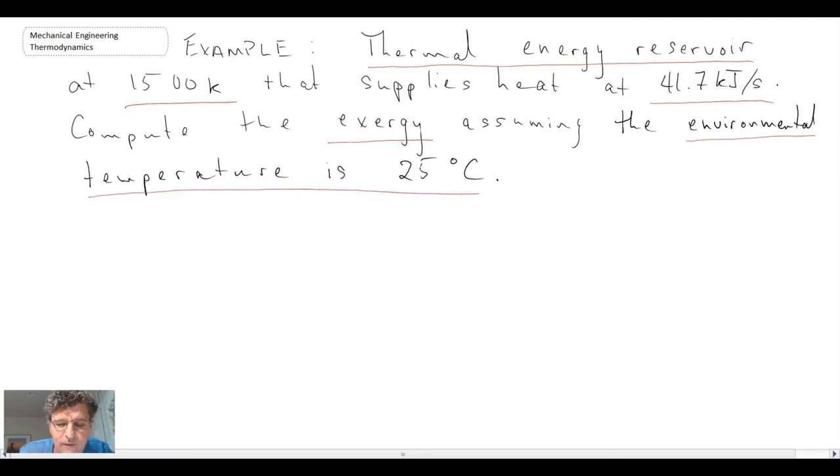What we can do is first of all remember exergy is a quantification of the reversible work output. So we need to look at a reversible heat engine in order to determine how much work we can get out of this system. And we studied a reversible heat engine earlier on in the course, and that was the Carnot cycle, the Carnot heat engine, and we have an expression for its thermal efficiency.